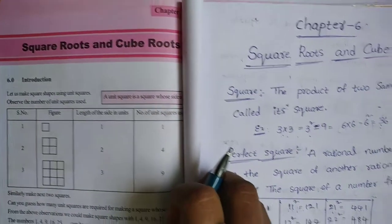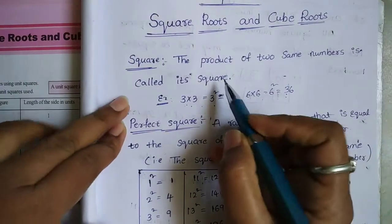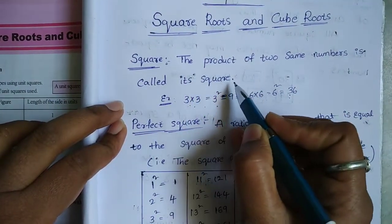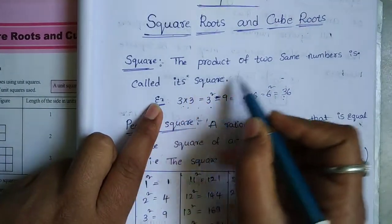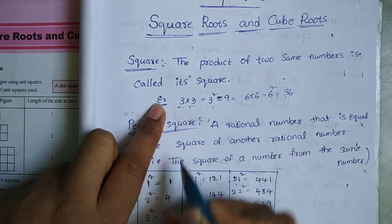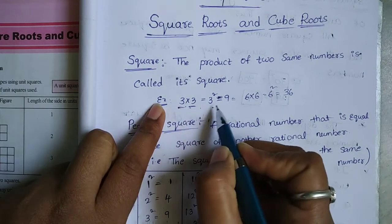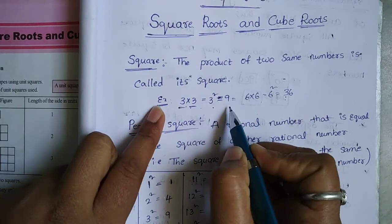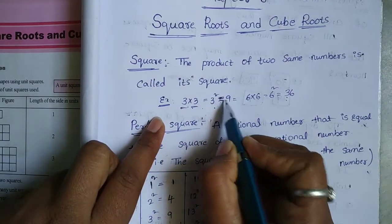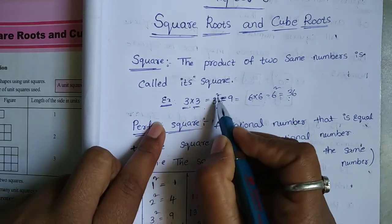First, the definition of square. The product of two same numbers is called its square. For example, 3 into 3 — the product of two same numbers is called square. 3 into 3, 3 squared equals 9.